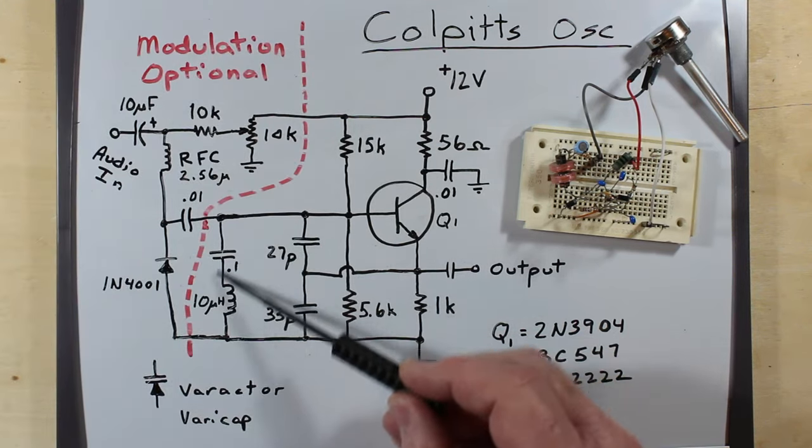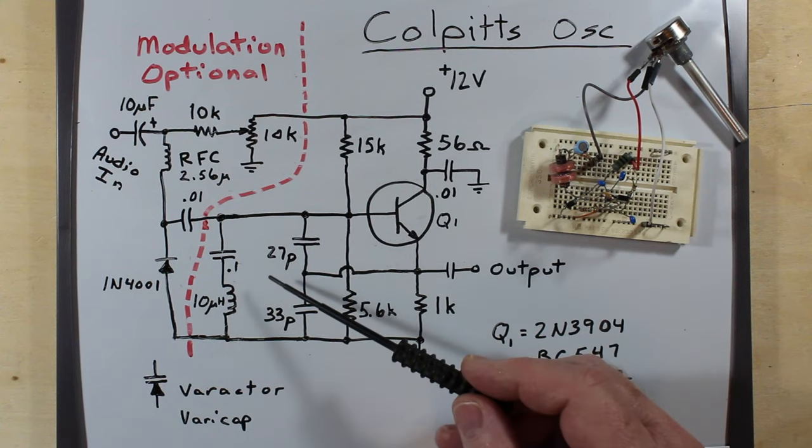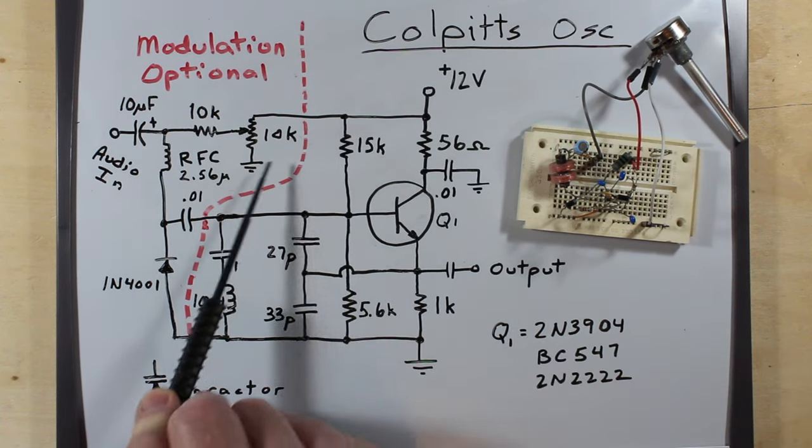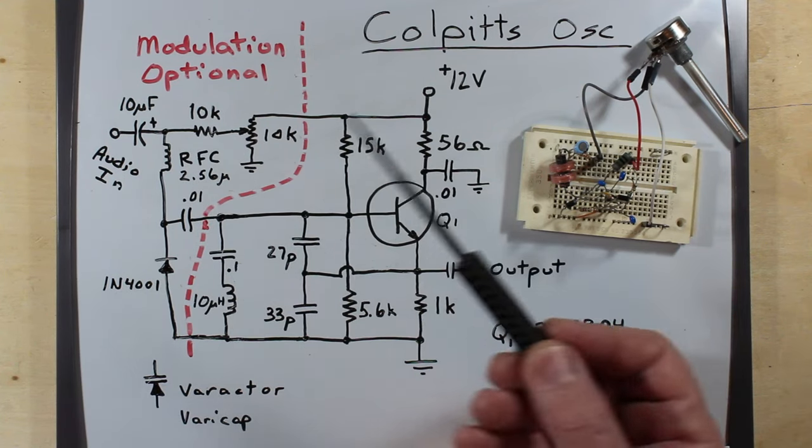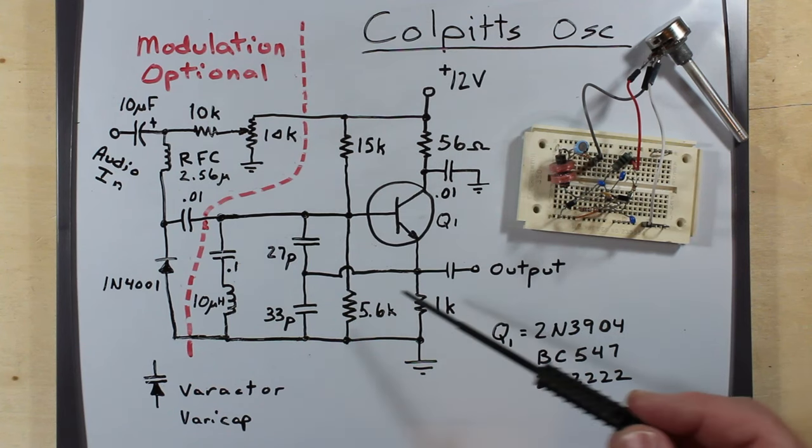So this is our tank circuit and as you see by the dashed red line, this is the portion that gives us the modulation that is optional. If you just want to simply make an oscillator, you don't need to do any of these things.